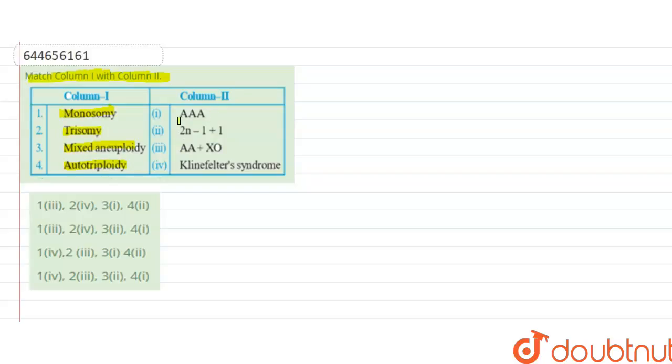and column 2 has triple A, 2n plus minus 1, plus 1, AA plus XO, Klinefelter syndrome and options are there. Four options are there.